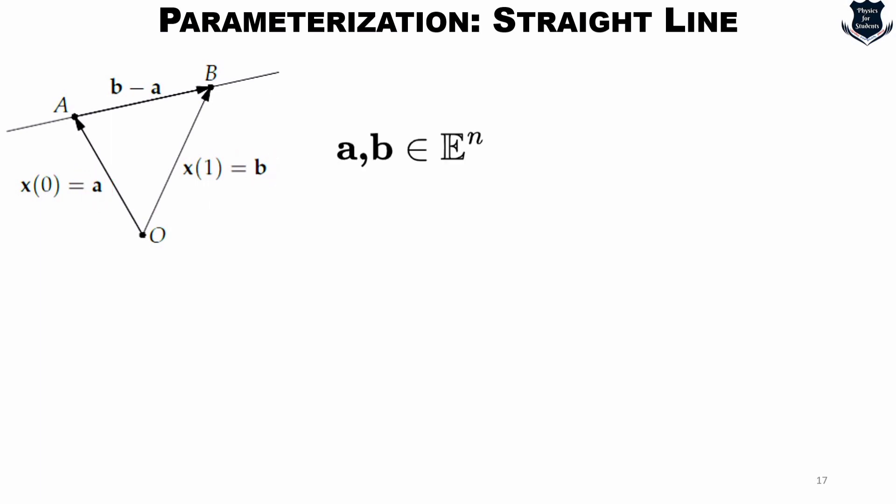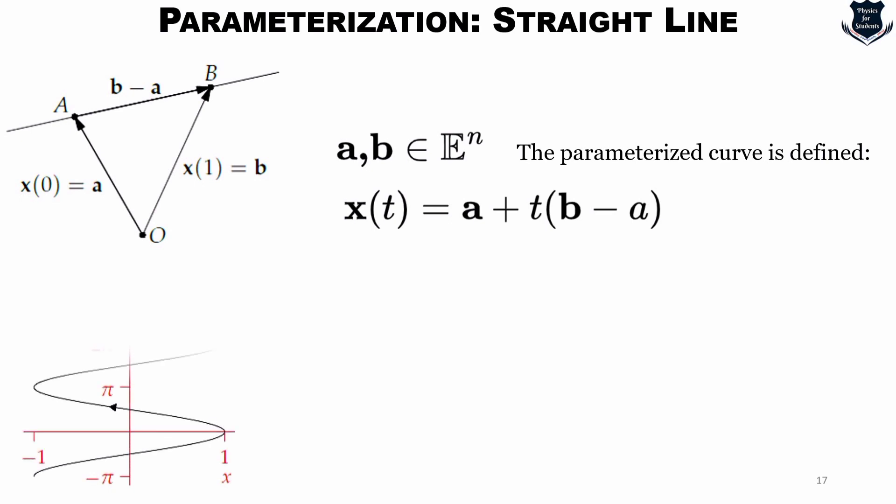Okay, so if you take a straight line for constant vectors a, b, which are these two straight lines a, b, which is a member of E^n, the parameterized curve will be defined as this. Very simple, it describes line through the point a and b with position vectors respectively a and b, t. Okay, so we can further write, so this is an example.